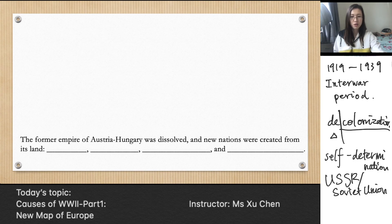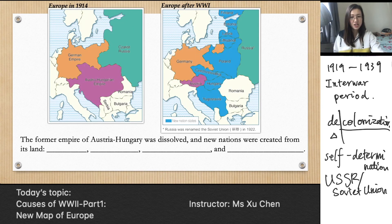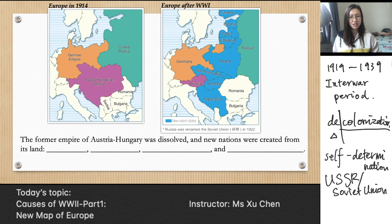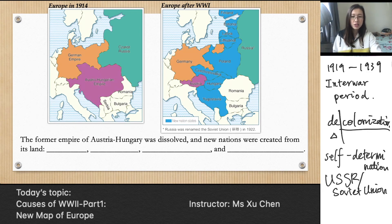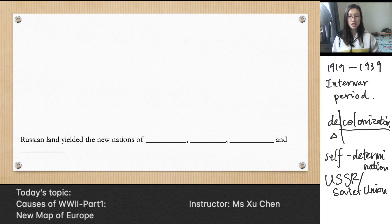The former Austro-Hungarian Empire was dissolved and new nations were created from its land. The Austro-Hungarian Empire was a very large country, but the remaining part of Austria is now really small. Yugoslavia, Hungary, Czechoslovakia, and part of Poland were created from the Austro-Hungarian Empire.